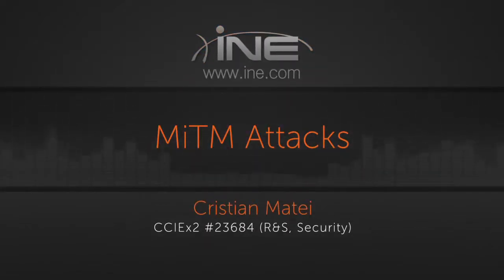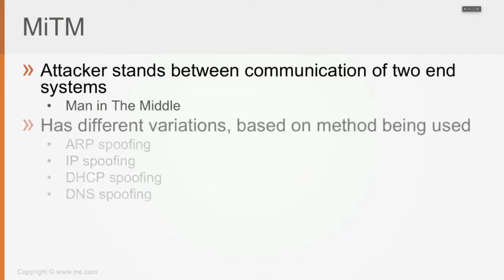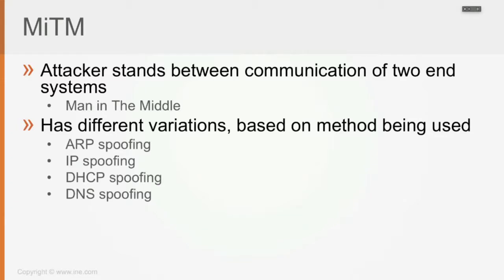We also have what is called man-in-the-middle attacks, where the attacker stands between the communication of two end systems and has different variations based on the method being used. For the attacker to stand in between the communication of two endpoints and get their hands on the data being transferred back and forth, different attacks can be used, like ARP spoofing, IP spoofing, DHCP spoofing, or DNS spoofing.